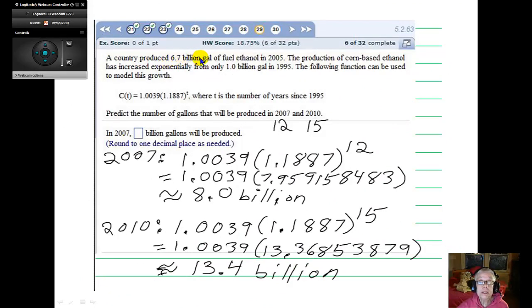A country produced 6.7 billion gallons of fuel ethanol in 2005. The production of corn-based ethanol has increased exponentially from only 1 billion gallons in 1995. The following function can be used to model the growth. That is, you can estimate how many billion gallons of ethanol fuel are produced every year after 1995 with this formula, where t is the number of years since 1995. So, for instance, 1996 would be year 1, 1997 would be year 2, 1998 would be year 3, and so on.